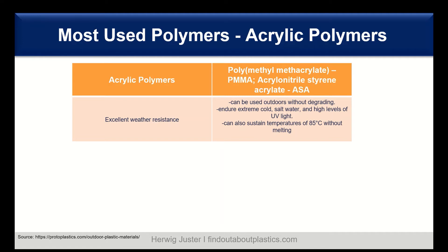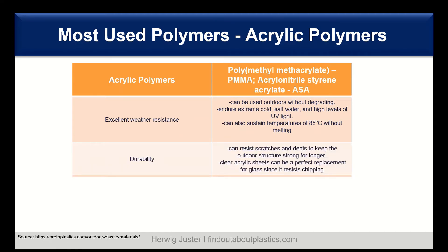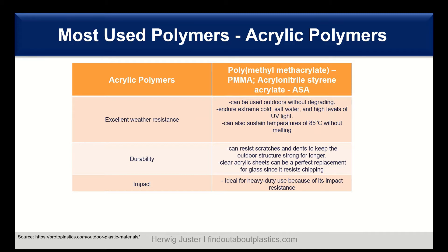PMMA and ASA both have excellent weather resistance, so you can use them outdoors without showing molecular weight degradation. They can endure extreme cold, salt water, and also high levels of UV light. From the temperature perspective, you can use them up to 80 to 85 degrees C. In terms of durability, they can resist scratches and dents, so the outdoor structure will stay strong for longer, and you can also replace glass with acrylic sheets. Acrylics are perfect for heavy-duty use because of their impact resistance and also superior light transmission, which makes them perfect for outdoor glazing applications.